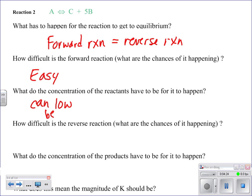And how difficult is it for the reverse reaction? Again, we're seeing that the forward is more likely. The reverse reaction is not going to happen. You're not going to have six particles come together as one. So it's going to be very difficult. And what do the concentration of the products have to be for this to happen? They would have to be very high.